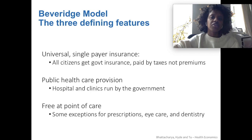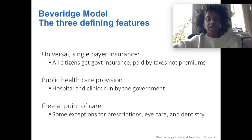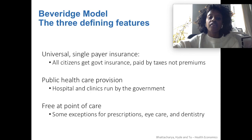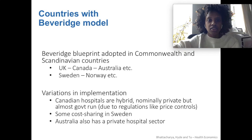There are three defining features of the Beveridge model. Number one is universal single-payer insurance — all citizens get this government insurance, and it's fully paid by taxes, not by premiums. Healthcare itself is publicly provided, so the hospitals and clinics are run by the government, and it is free at the point of care — when you show up, you don't pay anything out of your pocket. Some countries have exceptions for things like prescription drugs, eyeglasses, and dentistry.